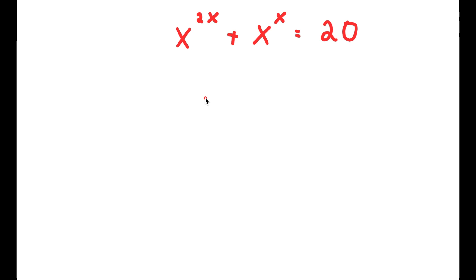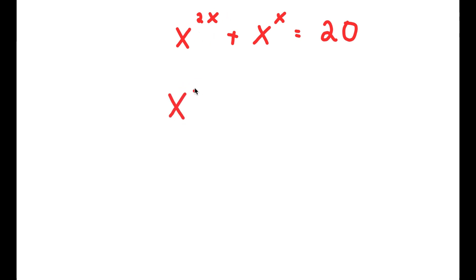In this problem, x to the power of 2x plus x to the power of x is equal to 20. To solve this, I'm going to first rewrite x to the power of 2x as x to the power of x, to the power of 2.